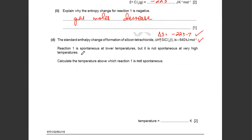The question says reaction one is spontaneous at lower temperature but not at very high temperature. We're going to analyze this using Gibbs free energy: delta G = delta H minus T delta S. For a spontaneous reaction, delta G must be negative. The enthalpy change is given as minus 640, so that is a negative value.